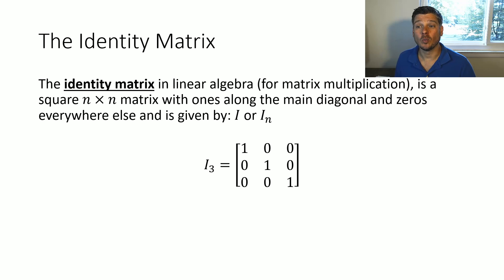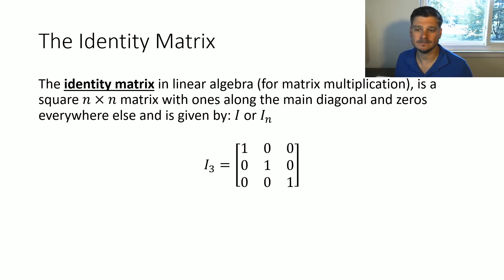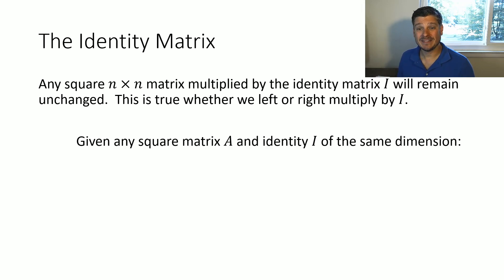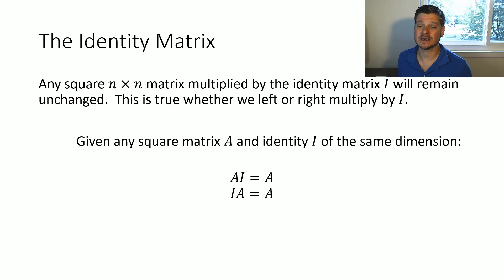The identity matrix in linear algebra — for matrix multiplication specifically — is a square matrix denoted as n-by-n, with ones along the main diagonal and zeros everywhere else. We give it as I or sometimes I-sub-n for the size. So I showed you the I₃ matrix, a three-by-three, with ones on the diagonal and zeros everywhere else. Whenever we multiply by the identity matrix, our original matrix remains unchanged, whether we left-multiply or right-multiply. So for any square matrix A, A times I equals A, and I times A equals A.